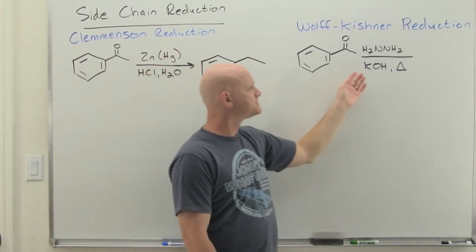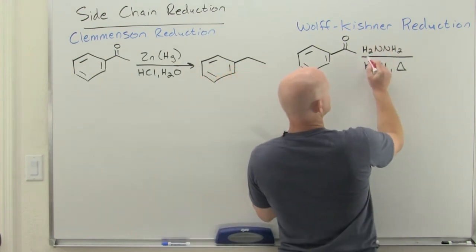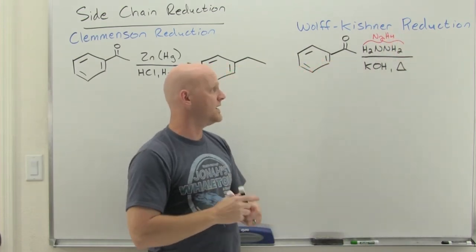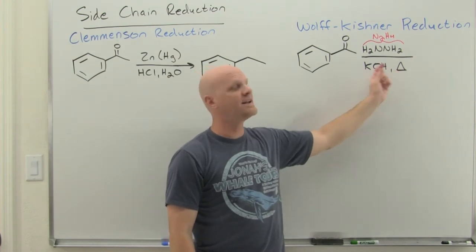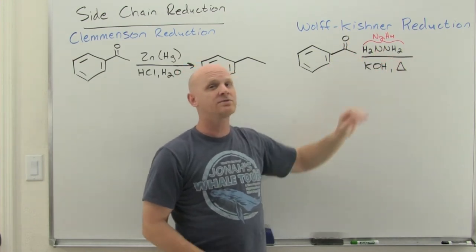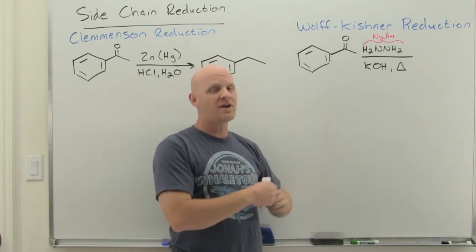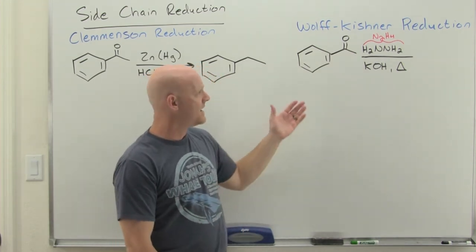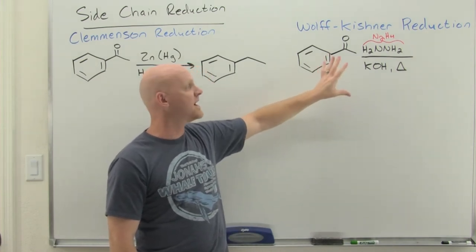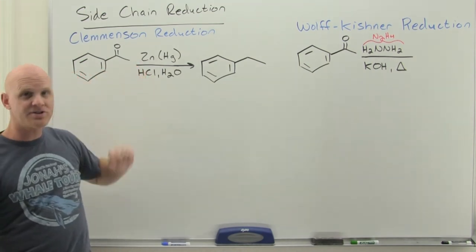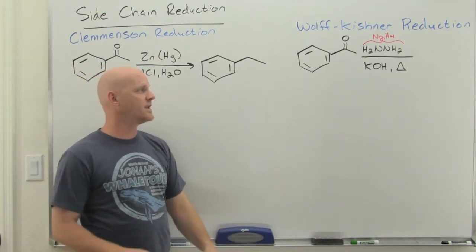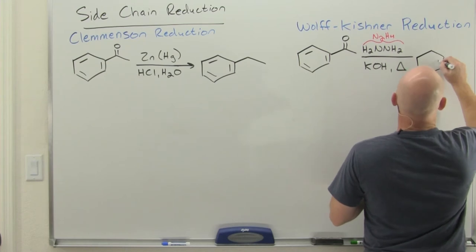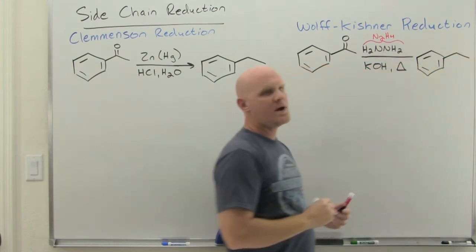For the Wolff-Kishner reduction, we use what's called hydrazine — H₂N-NH₂, also written as N₂H₄ — under highly basic conditions with potassium hydroxide and heat. The mechanism for this one we might actually study later in the ketone and aldehyde chapter; we're not going to study it in this chapter. For the Clemmensen reduction, don't worry about the mechanism — most of you aren't going to be on the hook for it in any way. The Wolff-Kishner does exactly the same thing: complete deoxygenation, reduction all the way down to an alkane.